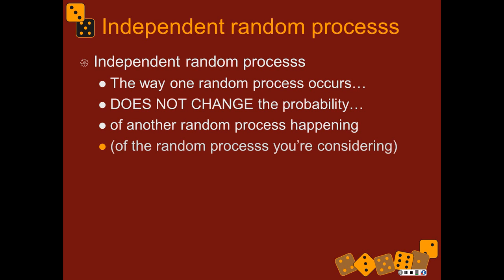This applies only to the random processes you're considering. It makes no sense to talk about the independence of one random process alone. Independence is always about how multiple random processes relate to each other. So if you've only got one roll of a die, it's not independent or dependent because there's only one random process.